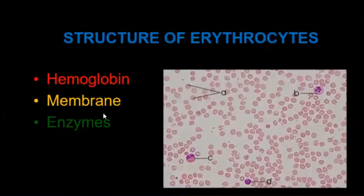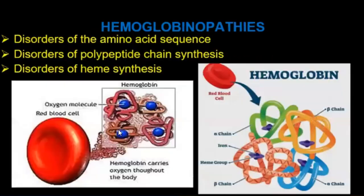Structure of the erythrocyte — very important: hemoglobin, membrane, and enzymes. Hemoglobin disorders include: disorders of the amino acid sequences, disorders of polypeptide chain synthesis, and disorders of heme synthesis.